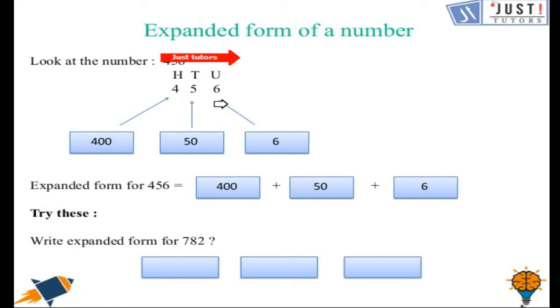6 is in its units column which means we have 6 units. That will be 6 only. Then we have 5 tens. That will be same as 5 times 10 which is 50.